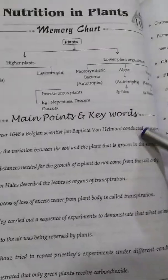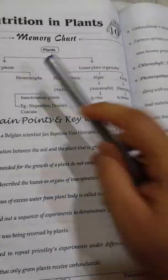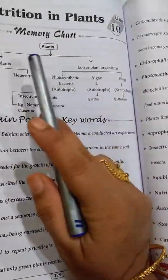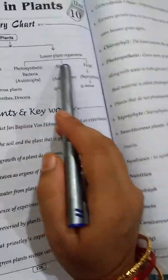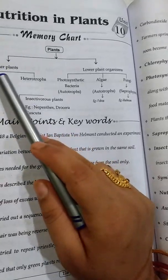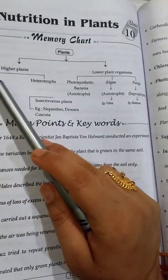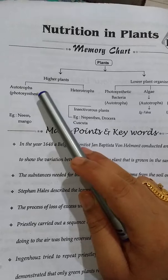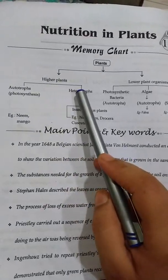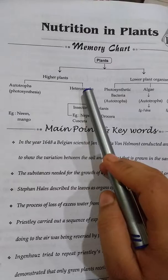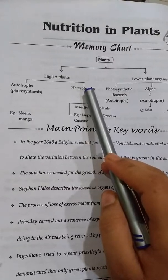Here, what are plants? Plants are two types. That is higher plants and lower plant organisms. The higher plants are autotrophs and heterotrophs. Autotrophs make their own food in the presence of sunlight. That process is called photosynthesis. Heterotrophs are plants depending on other organisms for their food.